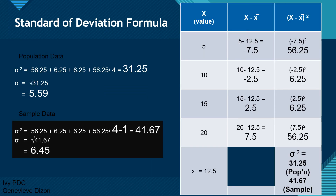Let's go back to the data we computed earlier. We already computed the variance: for population it is 31.25, and for sample it is 41.67. For the population data, we get the square root of 31.25, giving us 5.59 as the standard deviation. For the sample data, we get the square root of 41.67, giving us 6.45 as the standard deviation.